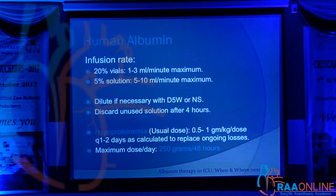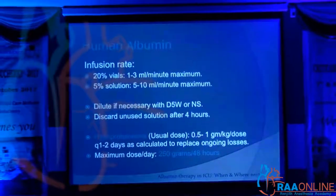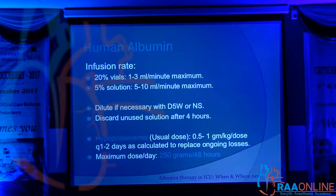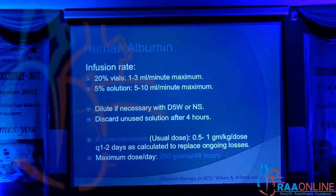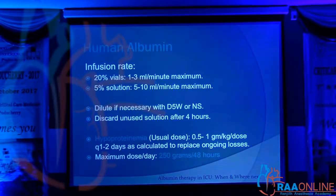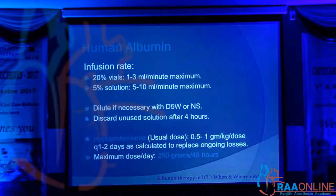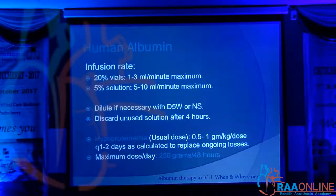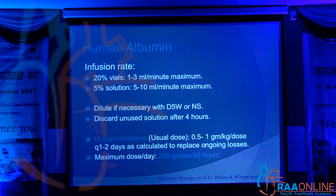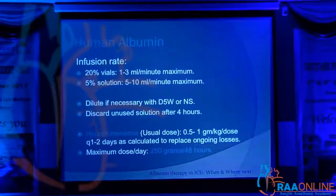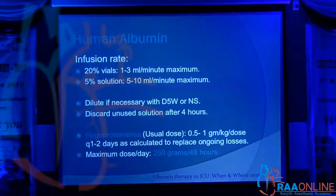This infusion rate is necessary; inspect the solution and discard any opened solution within 4 hours. It is most commonly used in hypo-oncotic conditions, particularly in GI surgery. The dose is 0.5 to 1 gram per kg per dose, calculated to replace ongoing losses, with a maximum dose of around 200 grams per 48 hours, i.e., over 2 days.